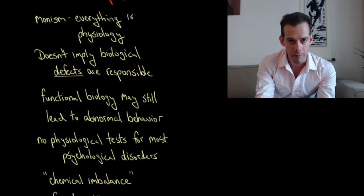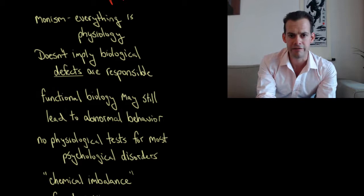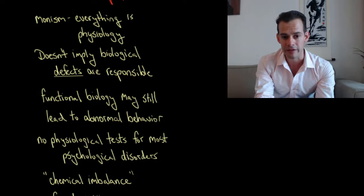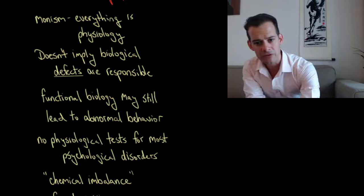In other words, you can have a perfectly functioning brain, let's say, or any other aspect of your physiology and yet you could still have symptoms of mental illness. And this is part of the reason why we don't have physiological tests for psychological disorders. We don't necessarily know that there are defects associated with certain mental illnesses.